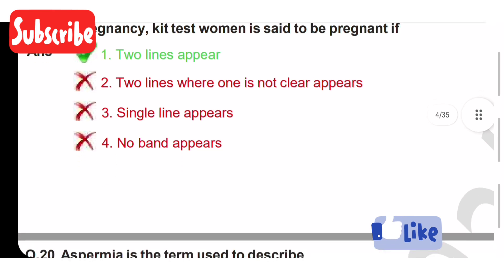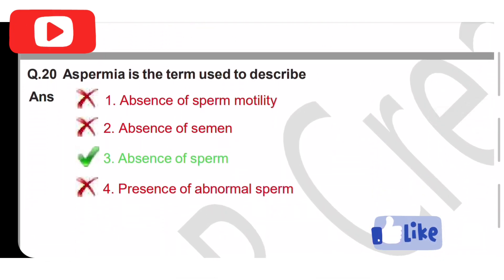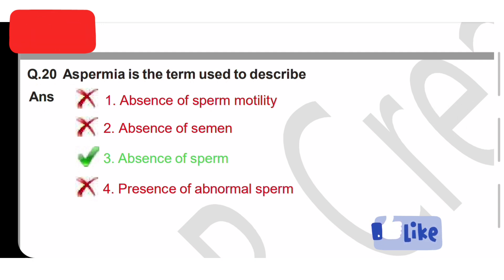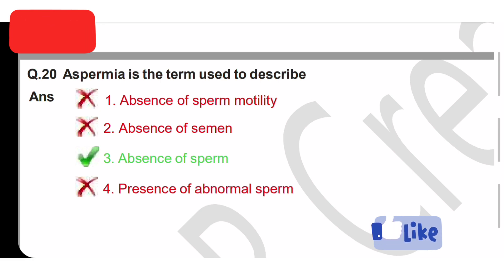Aspermia is the term used to describe the absence of sperm. Option three is absence of sperm actions, option four is presence of abnormal sperm. Absence of sperm is called aspermia.